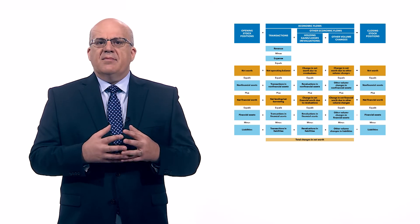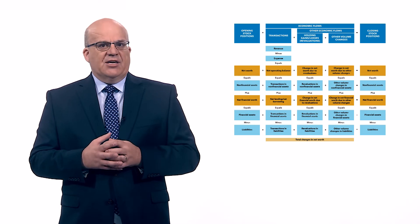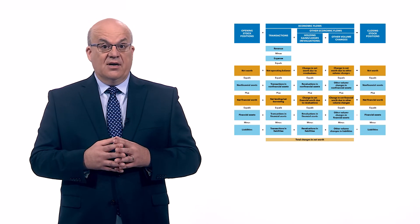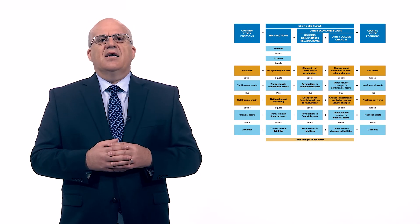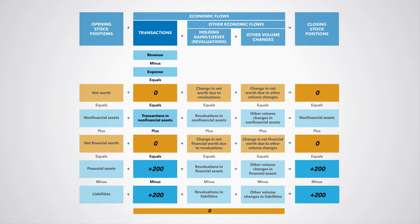Let us assume government issues a bond of 200 and receives 200 in cash. We can all agree that this is still a transaction, but does this event change government's net worth? Government's liabilities do increase by 200, but at the same time its holdings of cash increase by 200. So the effect on government's net worth and its net financial worth is therefore also zero. There is no change in the net operating balance and the net lending/net borrowing balance.